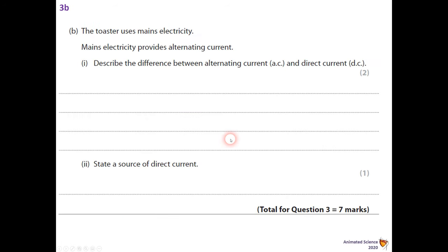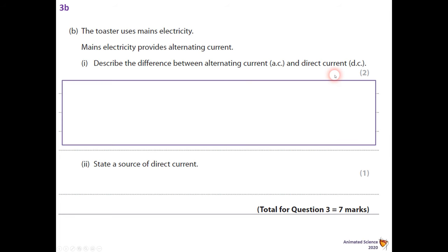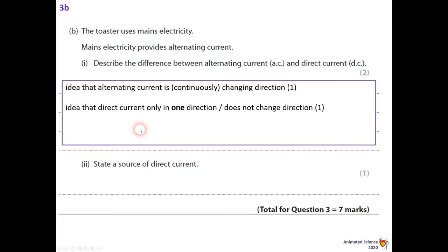The last part: the toaster uses mains electricity and mains electricity provides AC current alternating. Describe the difference between AC and DC. Well, two marks are at stake, so they're looking for the idea that AC is continuously changing direction - that's one mark - and the idea that direct current is only one direction and does not change direction. It allows current to travel backwards and forwards, or current is positive and negative will get your mark as well.